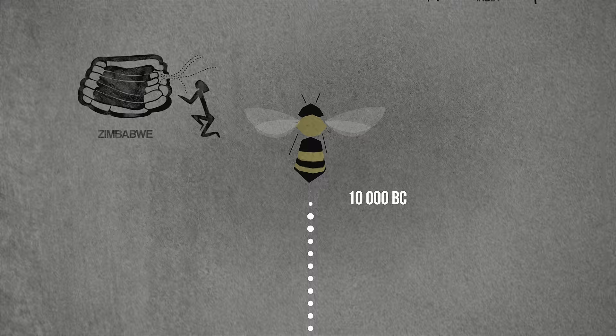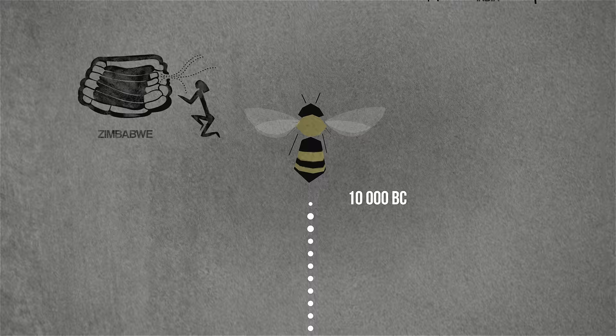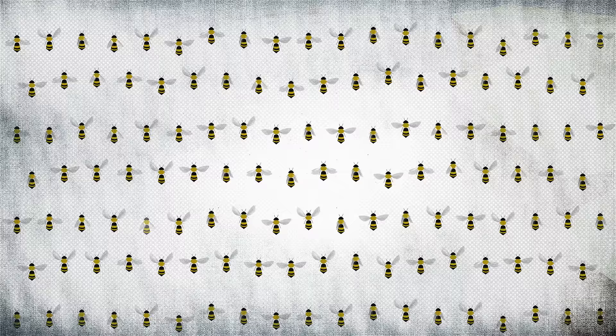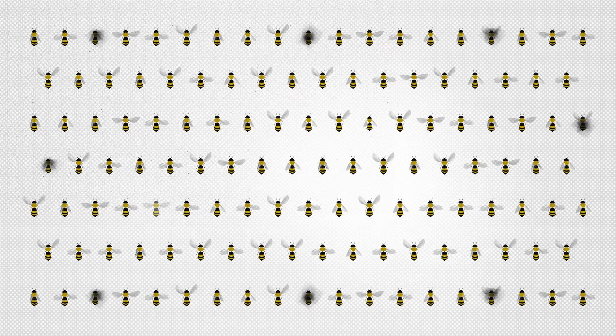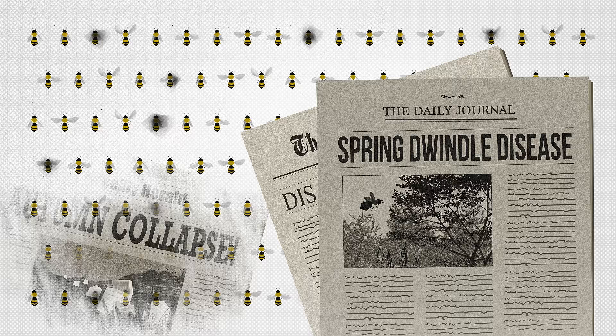These mysterious disappearances aren't new. Humans have been collecting honey for centuries. But it wasn't until European settlers in the 1600s introduced the subspecies Apis mellifera that we domesticated bees. Since the 19th century, beekeepers have recorded occasional mass disappearances, giving them enigmatic names like disappearing disease, spring dwindle disease, and autumn collapse.